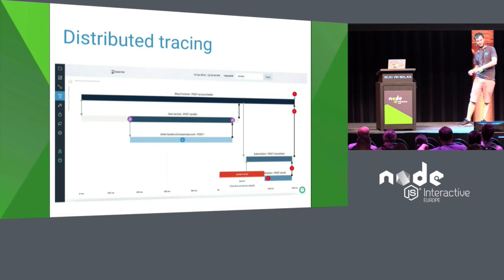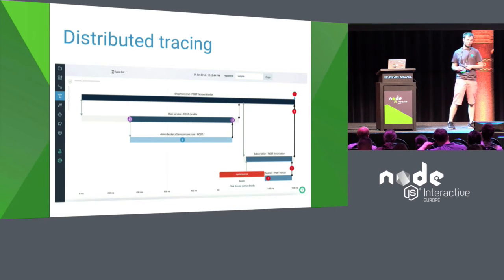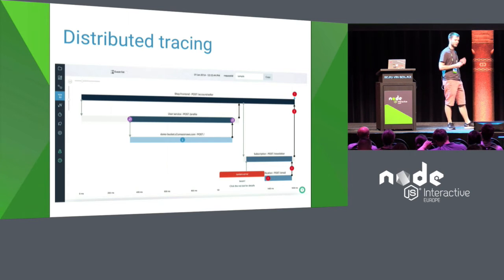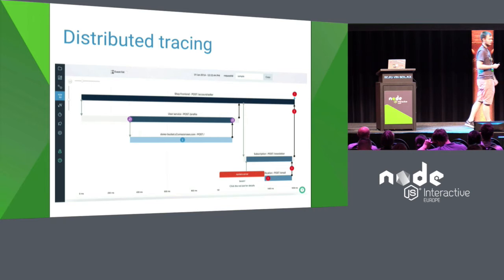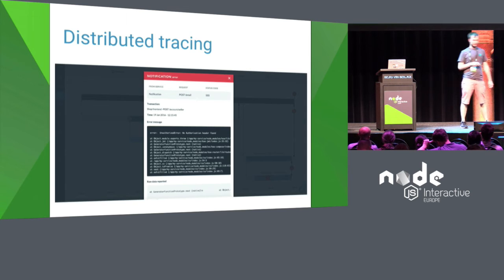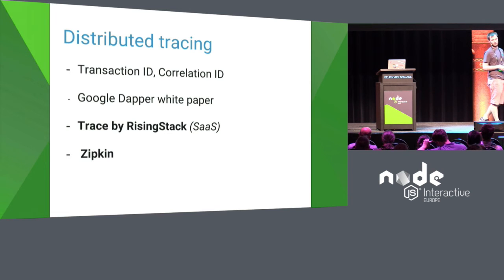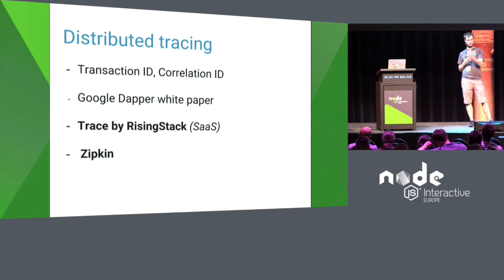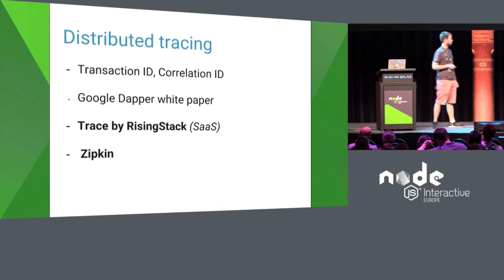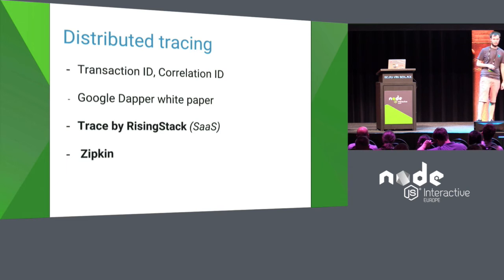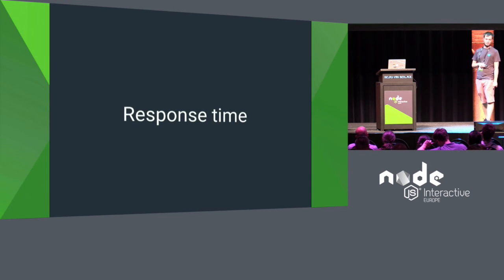Distributed tracing — shown here in Trace — visualizes one transaction: a single request from the user that in the background reaches multiple services and databases. With this, it's pretty easy to find what went wrong. For this you need a transaction ID or correlation ID, so whenever one service calls another you have an ID to connect them later. The whole concept is based on the Google Dapper white paper, with current implementations like Trace or Zipkin, which is more Java-based.